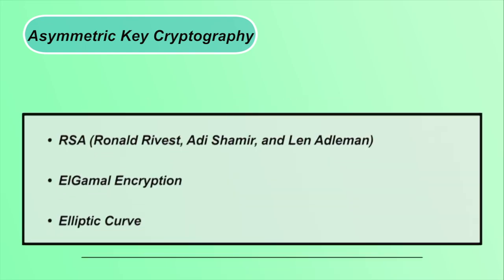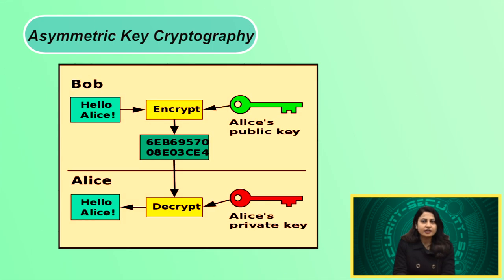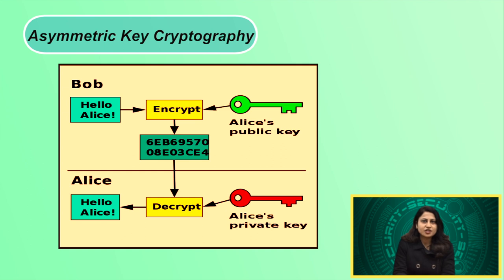Public key encryption algorithms include RSA — named after Ronald Rivest, Adi Shamir and Len Adleman — ElGamal encryption, and elliptic curve. In the figure, you can see that the original text is encrypted using the public key of the receiver and decrypted using the private key of the receiver. Private keys should be confidential and public keys should be available to all. There is no concept of sharing the key, unlike symmetric key cryptography.